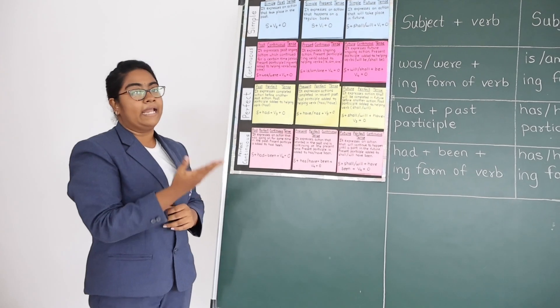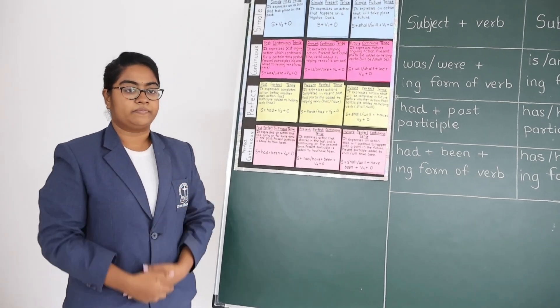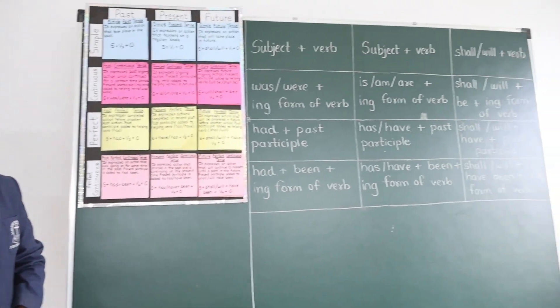I would like to call Shaya to come ahead and explain regarding the present tense. Simple present tense expresses an action that happens on a regular basis. Present continuous tense expresses an ongoing action. Present perfect tense expresses an action that has already been completed. Present perfect continuous tense expresses an action that has been started in the past and is still continuing.